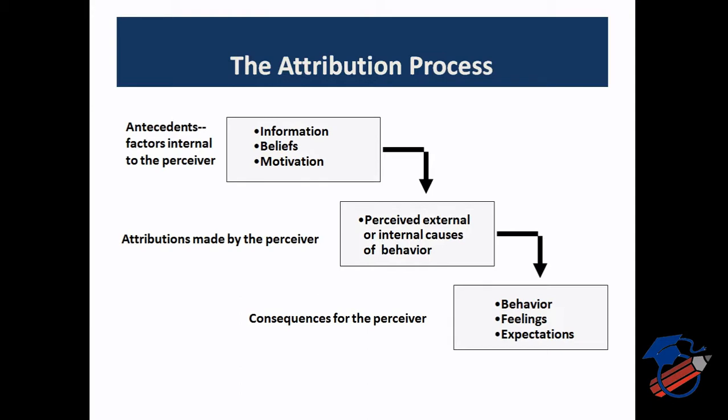It is a three-stage process. First is antecedents — the prior factors before attribution — which relate to the perceiver. This can be information, beliefs, and motivation. Information refers to whatever the perceiver has collected from different sources — it can be some database, their own observation, or any other form of information. Second is belief — there is a belief system in all of us that develops since childhood and takes a long time; beliefs can be changed when something new is encountered. Third antecedent factor is motivation about some perception.